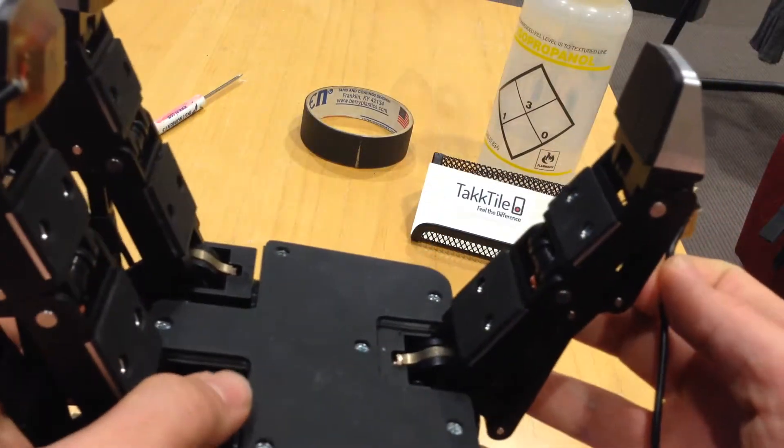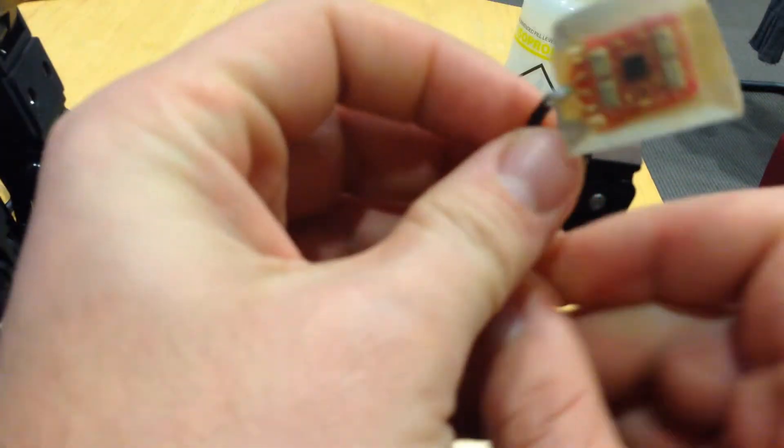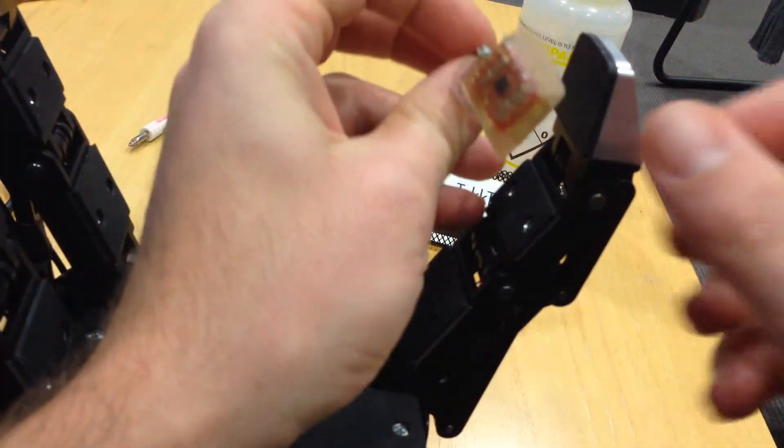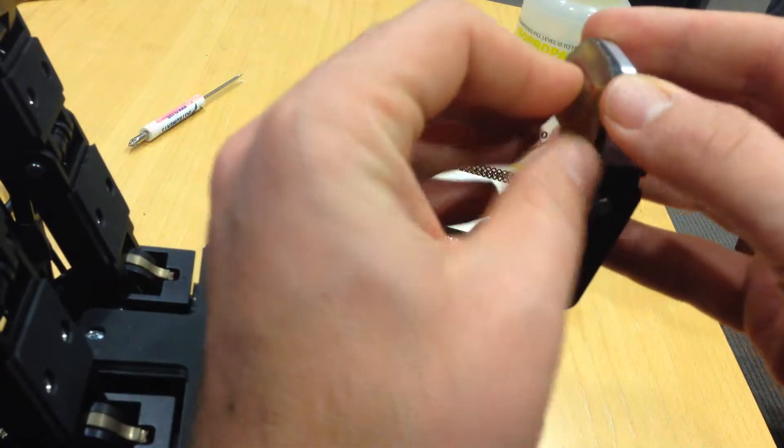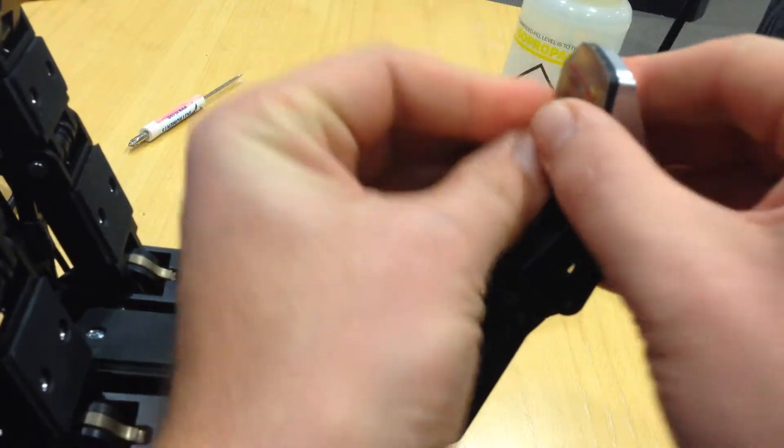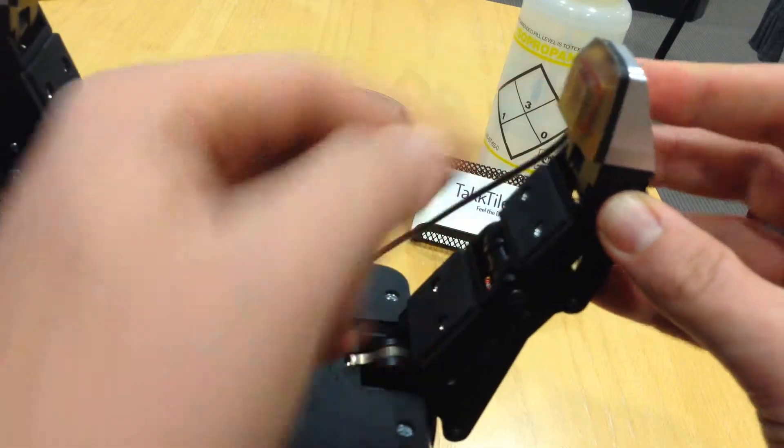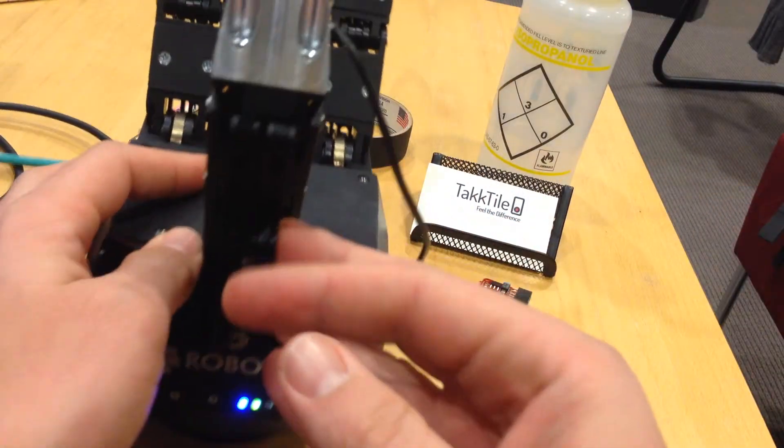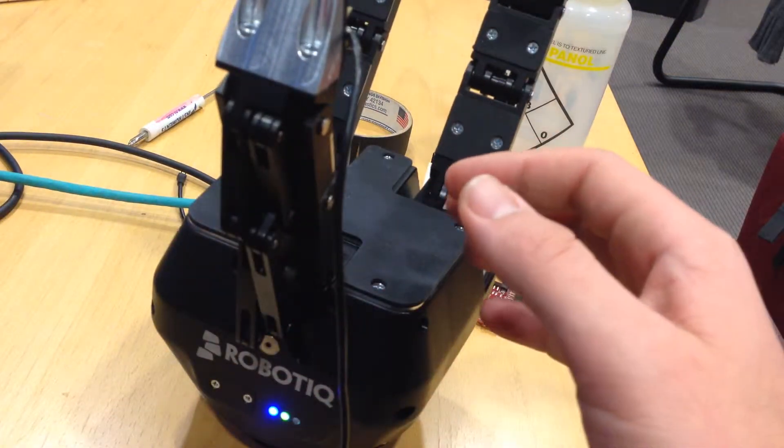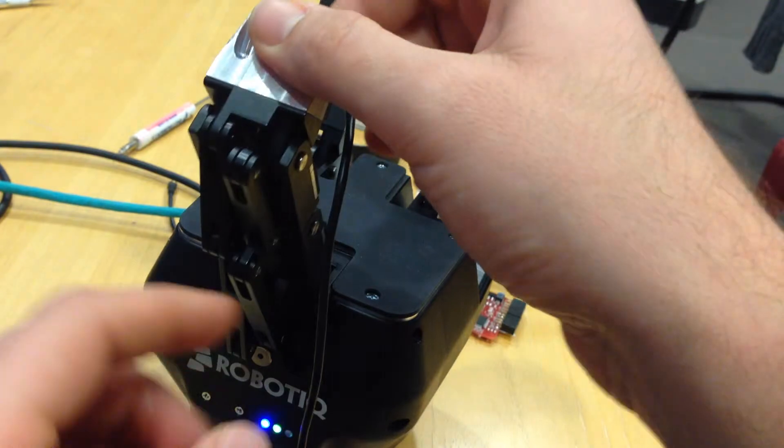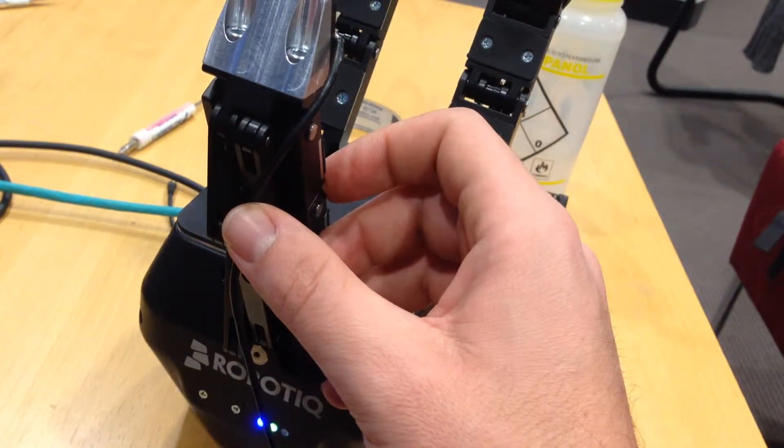Now position the sensor and press it firmly. The sensor is now positioned and pressed firmly against the finger. Next challenge is to connect the wire. We recommend taking the wire on the back here. Let's close the finger slightly.